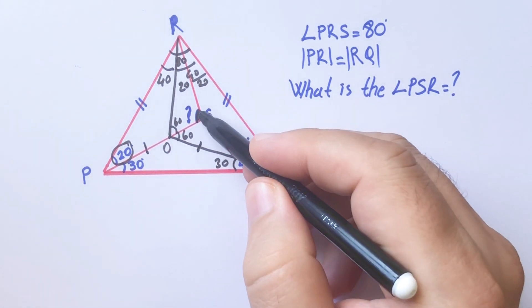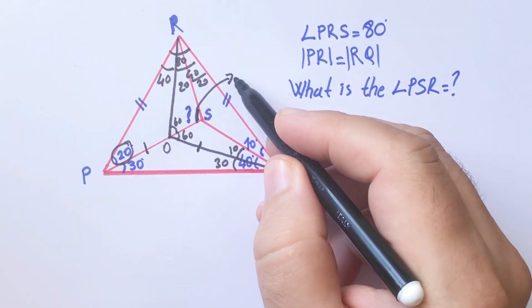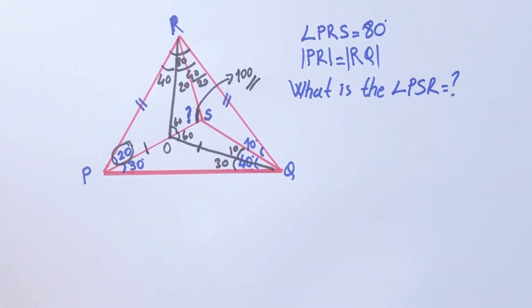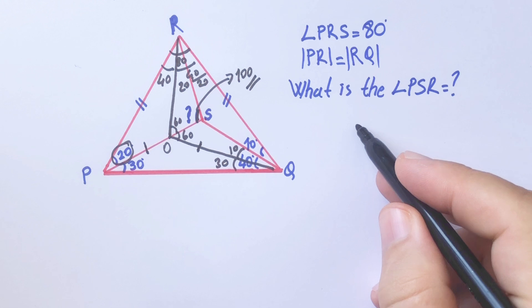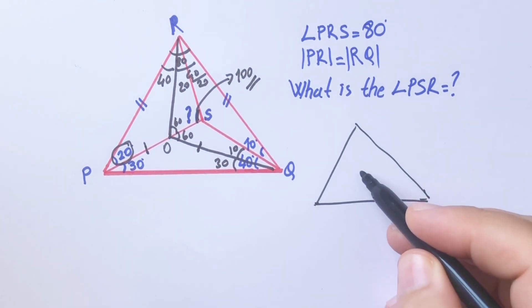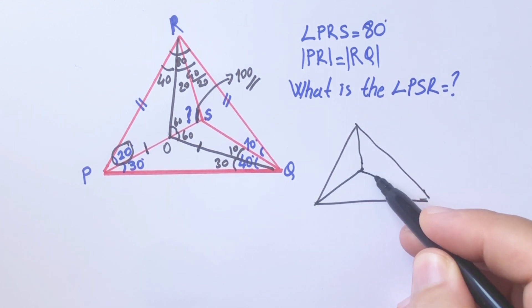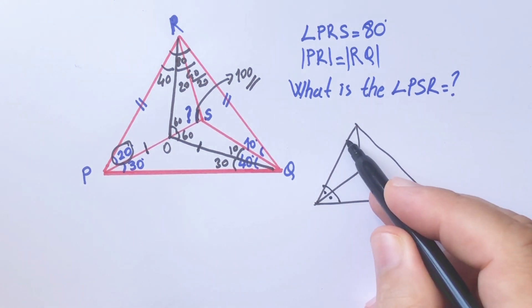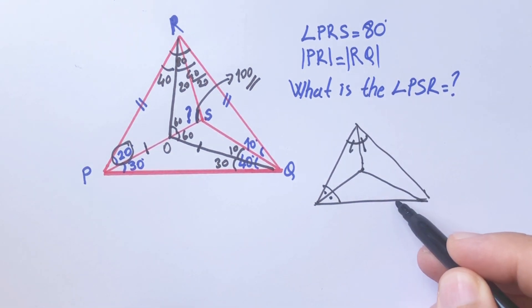The first one: in a triangle, if we have two bisector lines, the third one must be a bisector. This is important.